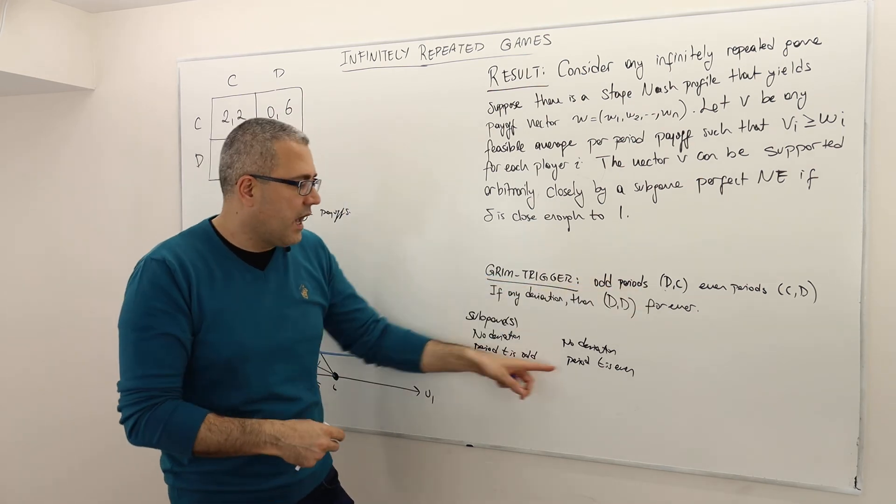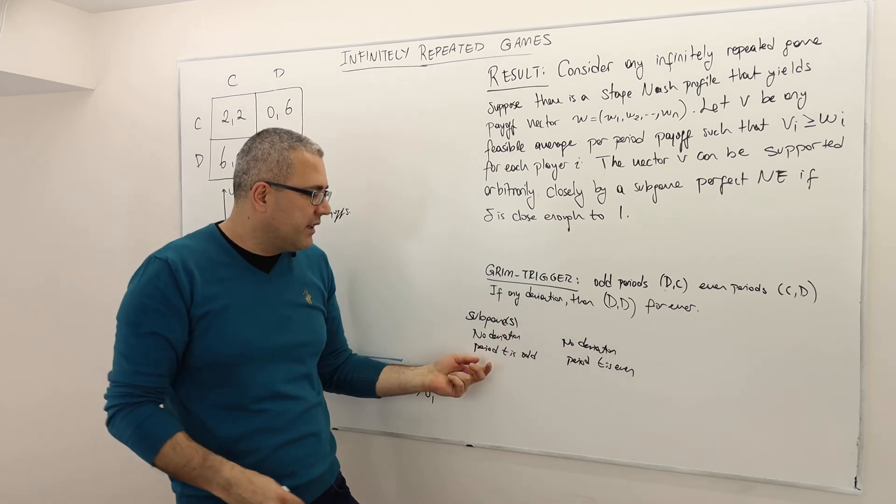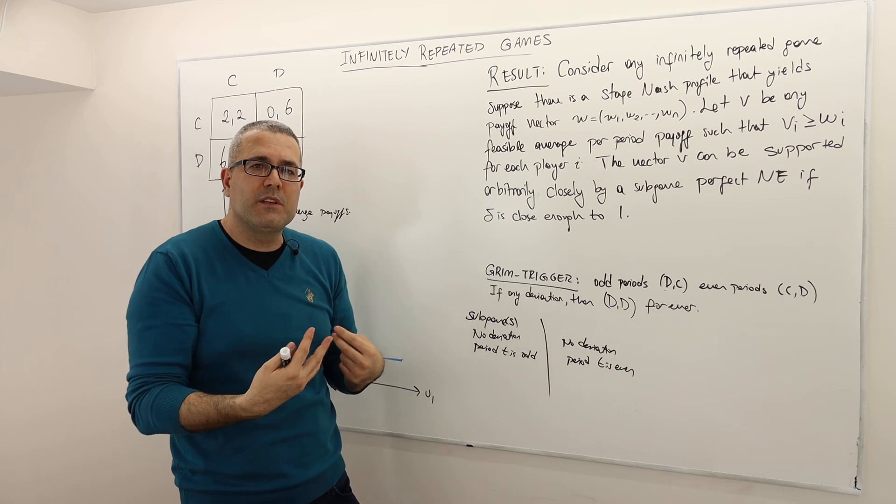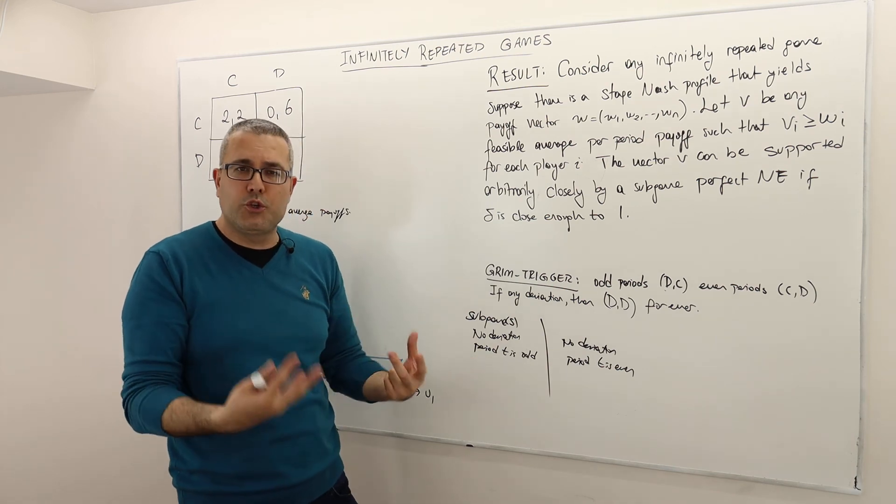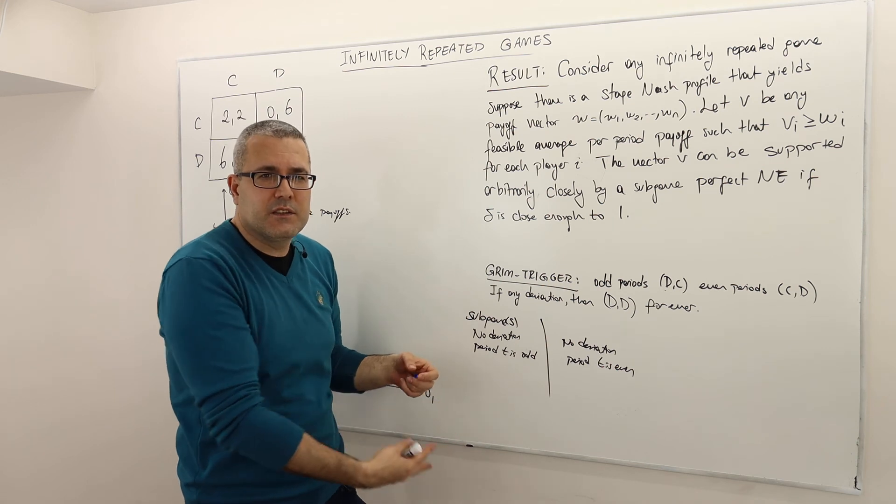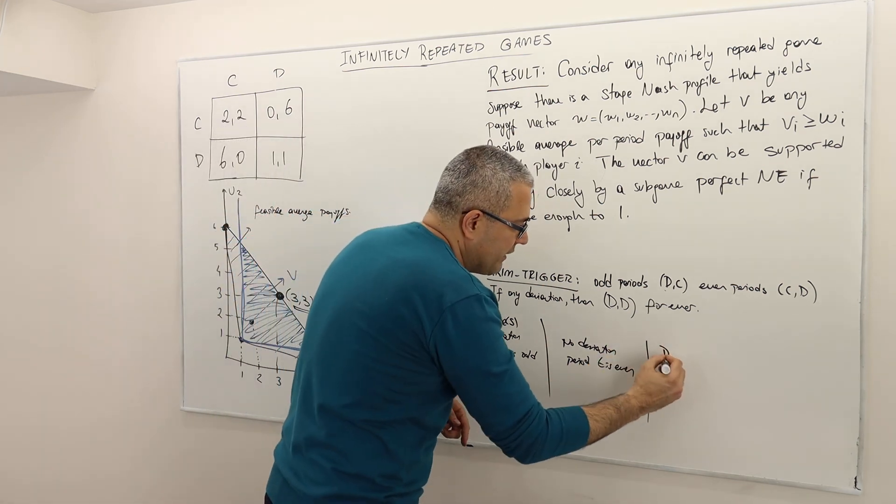Which means on this period T, they're going to play DC. And here, it means on this period they're going to play CD. By dividing those possible subgames, I actually am making sure what deviation means in this analysis, alright? So that's important. And then, obviously, a deviation. So some deviation occurred.